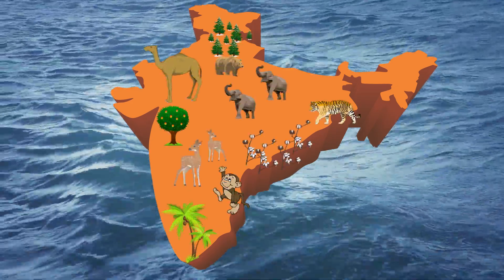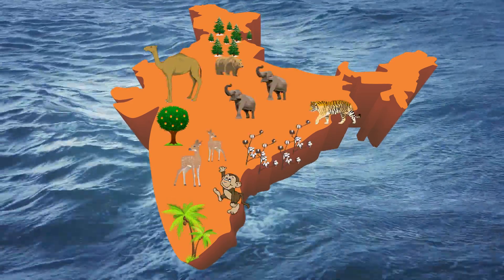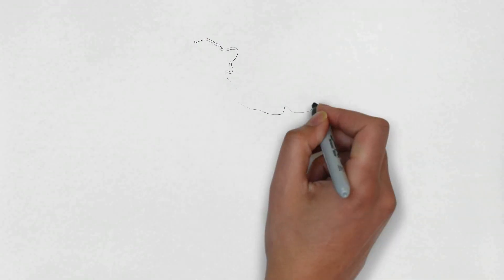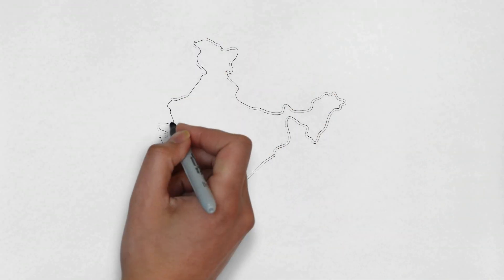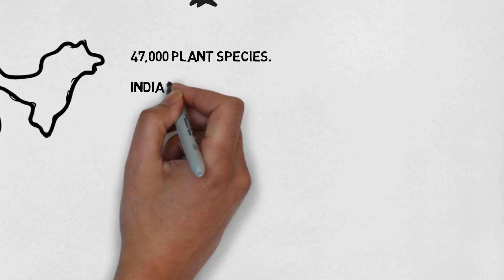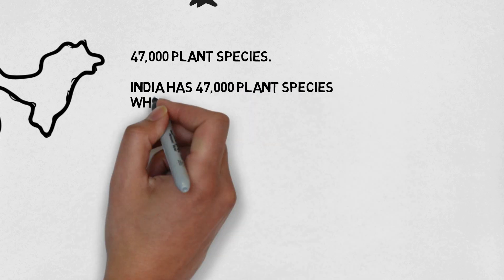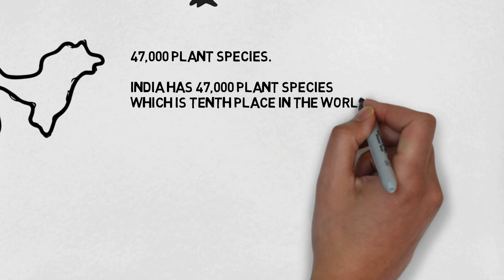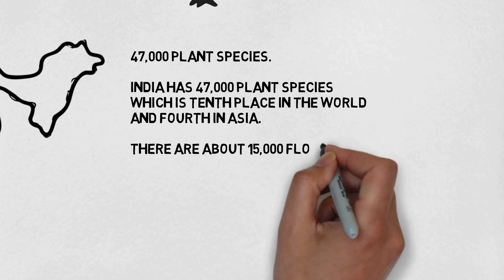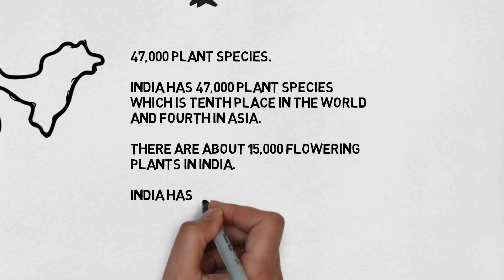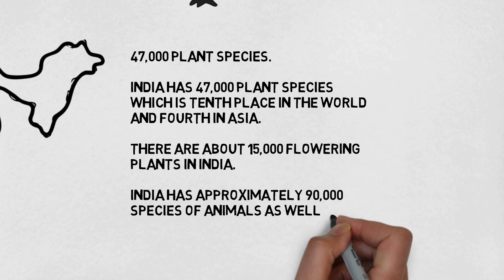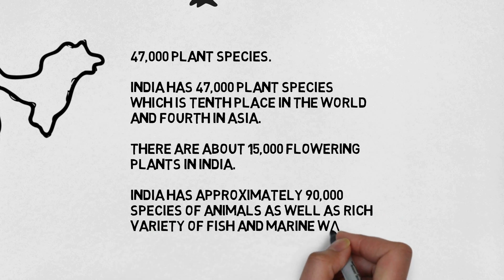India is one of the 12 mega biodiversity countries of the world. It has about 47,000 plant species, which takes it to the 10th place in the world and the 4th place in Asia as far as biodiversity is concerned. There are about 15,000 flowering plants in India, approximately 90,000 species of animals, and an unbelievably rich variety of fish and marine life.